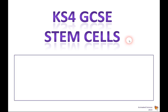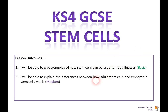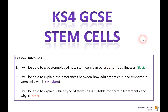In this video we are going to look at GCSE stem cells. The outcomes we're looking for: I will be able to give examples of how stem cells can be used to treat illnesses — that's the basic aim. I'll be able to explain the differences between adult stem cells and embryonic stem cells — that's the medium level. And then be able to apply or explain which type of stem cell treatment is suitable for certain ailments — that's the harder thing.